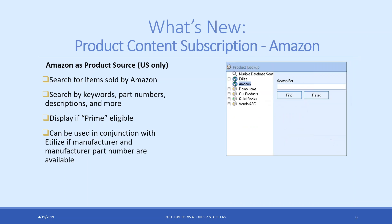Product content subscription users now have access to Amazon as a product source — a brand new integration. You'll be able to search for Amazon items directly inside QuoteWorks, just like on amazon.com, by keywords, part numbers, or descriptions. It'll show if an item is Prime eligible, and you can cross-reference the manufacturer part number with Utilize to see what other vendors carry that item. For now, this is only available for US users.